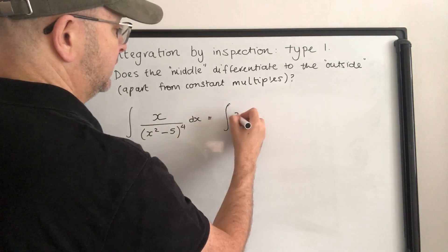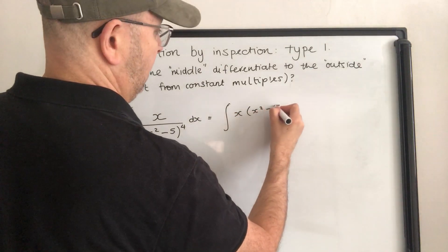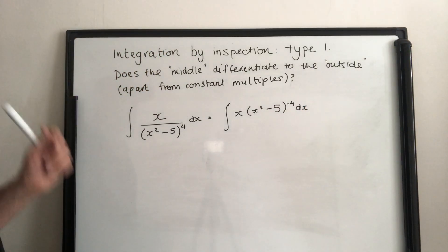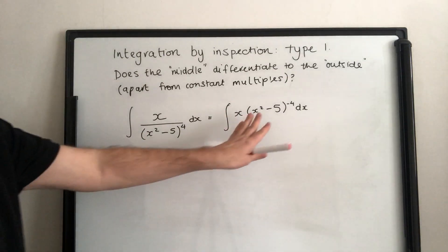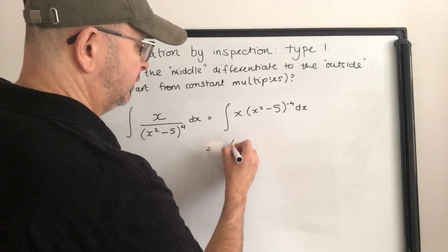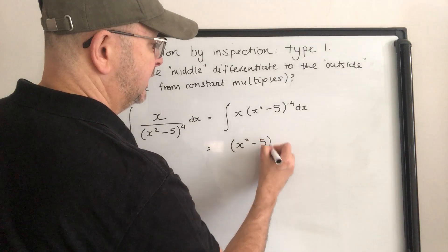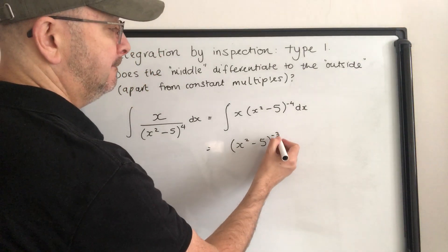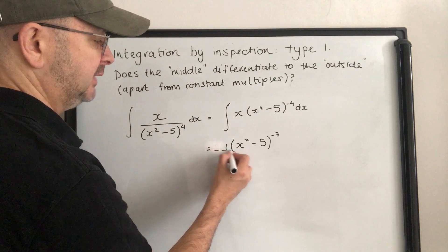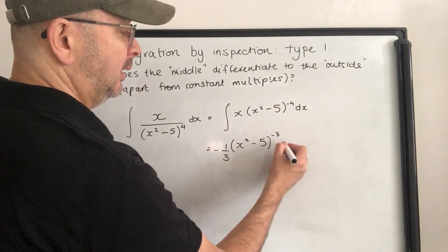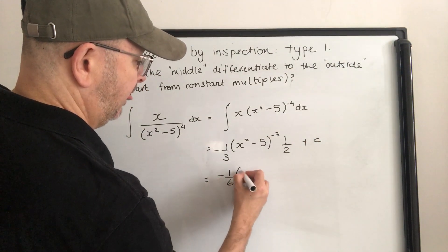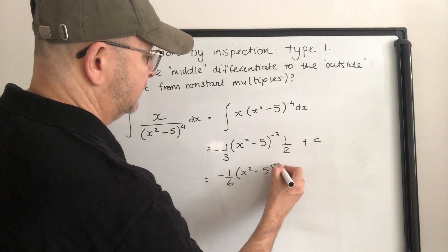On this one I'm going to write it with a negative power. Once I've done that it's just like the other questions. Does the middle differentiate to the outside? That differentiates to 2x — I can adjust for the 2. Ignoring the x, what sort of thing would differentiate to that? Minus 3, so differentiating gives a power of minus 4; minus 3 comes down the front and I don't want it. We multiply by 2x but only want the x. So the final answer is minus one sixth times x squared minus 5 to the power of minus 3, plus c.